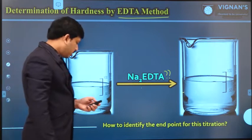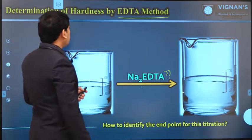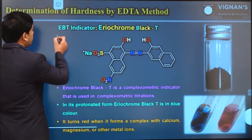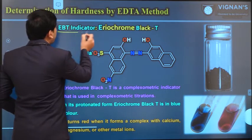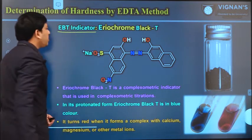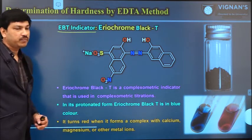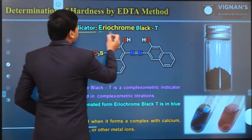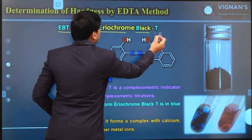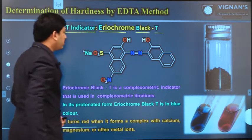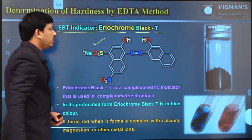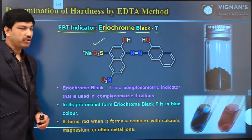We have different types of indicators like methyl orange, phenolphthalein, or diphenylamine for acid-base or redox reactions. But this is a different type — a complexometric titration. In this case we need one more complexing agent as an indicator. For EDTA titration, the most suitable indicator is EBT — Eriochrome Black T — and this is the structure of the EBT indicator molecule.